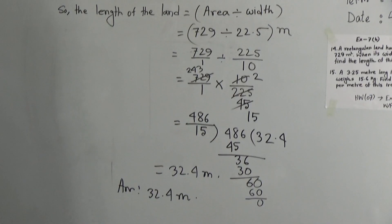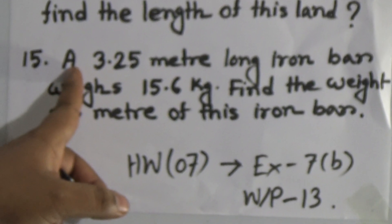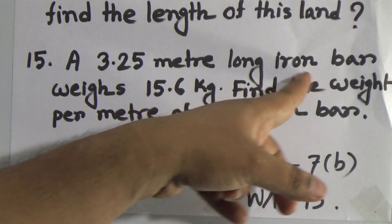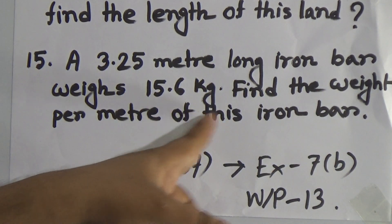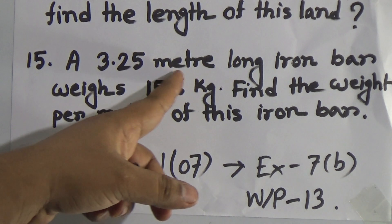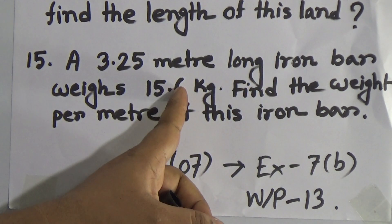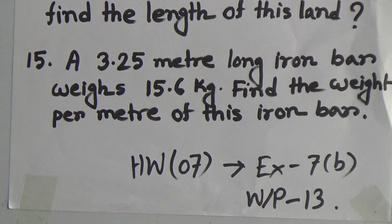I hope you have understood this question. Next, we shall solve question number 15. A 3.25 meter long iron bar weighs 15.6 kg. Find the weight per meter of this iron bar. That means the weight of 3.25 meter iron bar is 15.6 kg. So the weight of 1 meter iron bar is what?